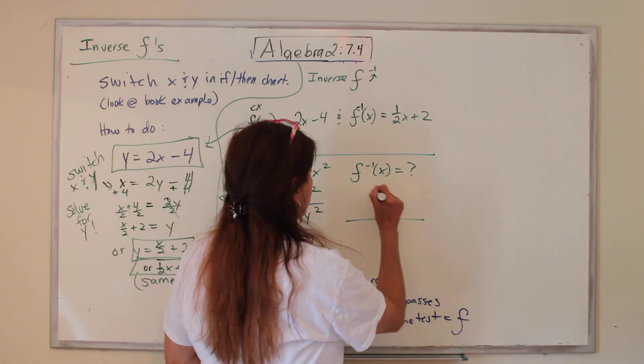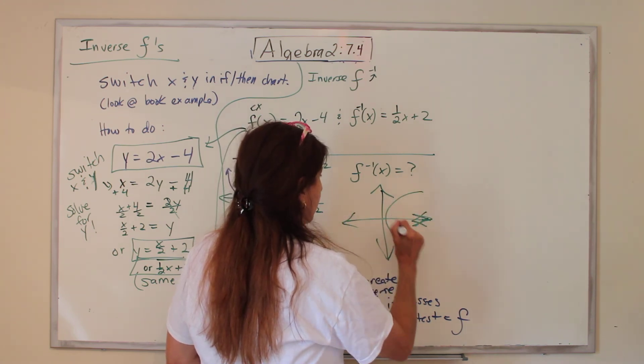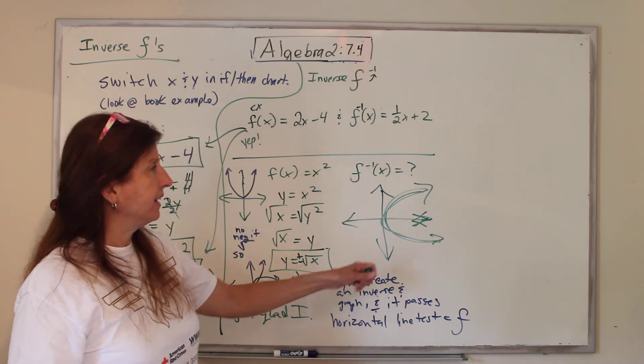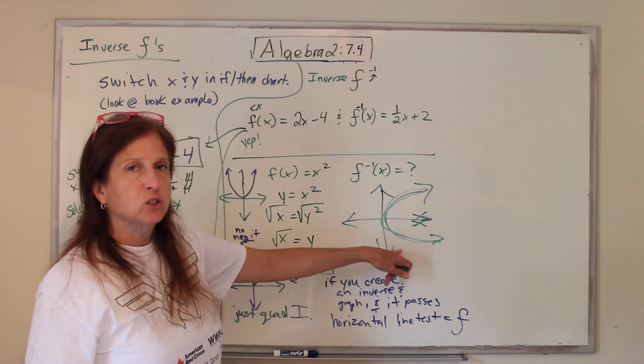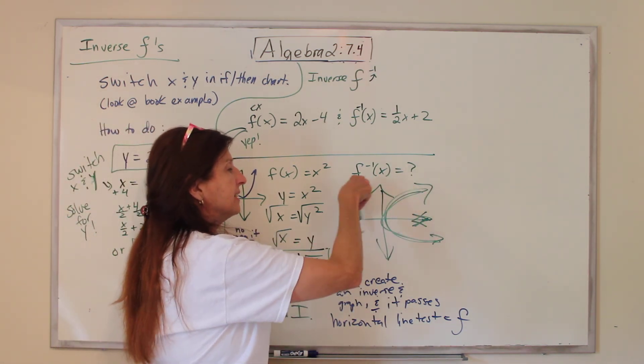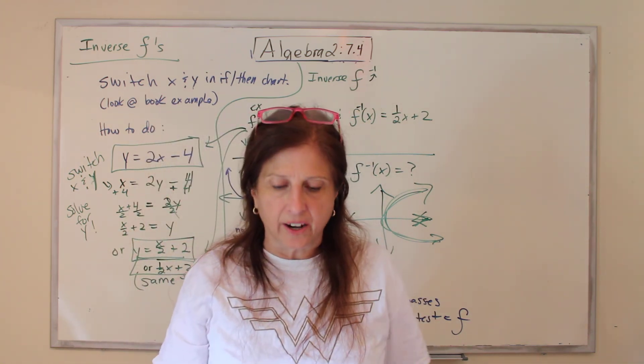Now normally, if you graph this—oops, dyslexia there—if you graph that, and we're going to learn how to do that, that is instead of X being squared, Y squared is this thing. This is not a function because it does not pass the vertical line test. We'll get into that more later.